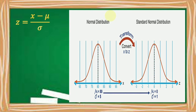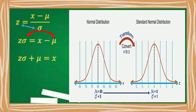This time, let us convert a z-score to a normal variable x. Let us first derive a formula for x using the formula for z. Given the formula z is equal to x minus μ over σ, we can cross-multiply to get z times σ is equal to x minus μ. Then moving negative μ to the left side of the equation, we have z times σ plus μ is equal to x. Therefore, the formula for x is: x is equal to z times σ plus μ.